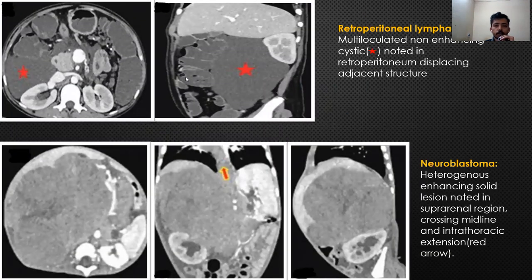Another case showed a multi-loculated thin-walled cystic lesion, a non-enhancing cystic lesion noted in the retroperitoneum, possibly abutting the right kidney and displacing the adjacent structures. Tissue diagnosis came as retroperitoneal lymphangioma.